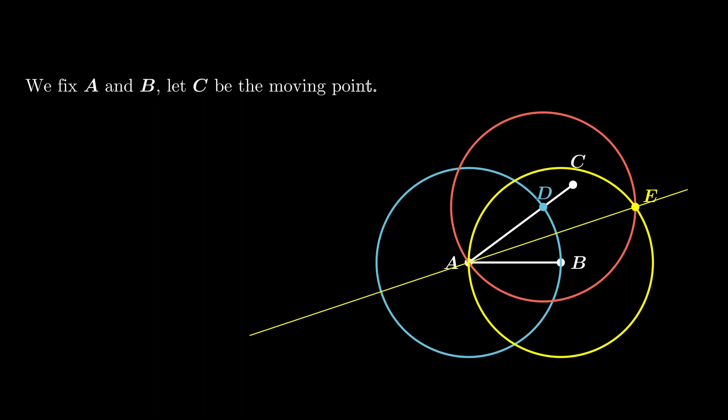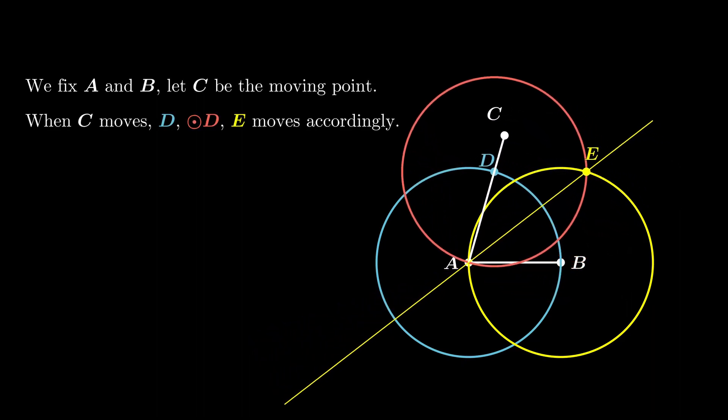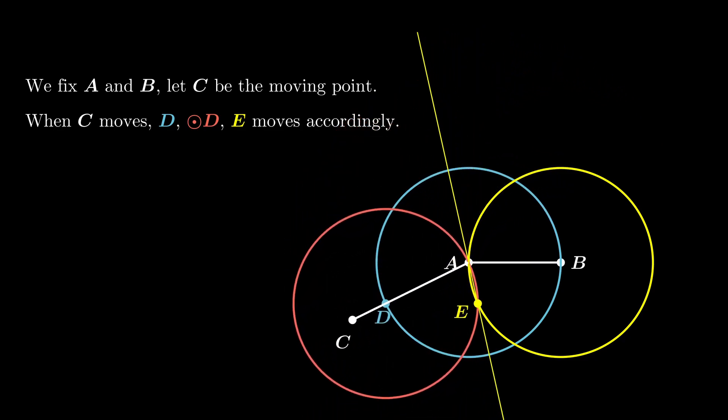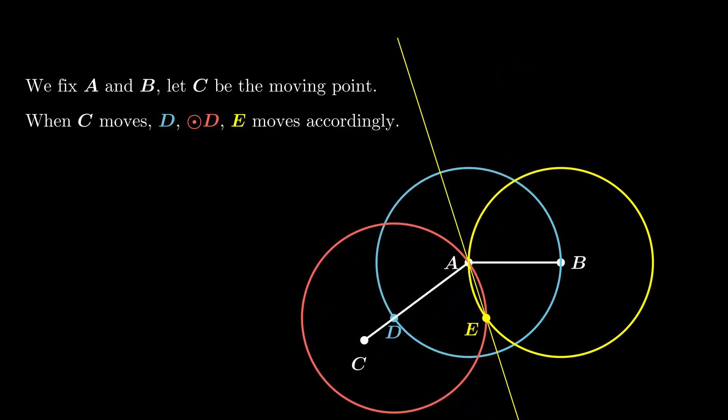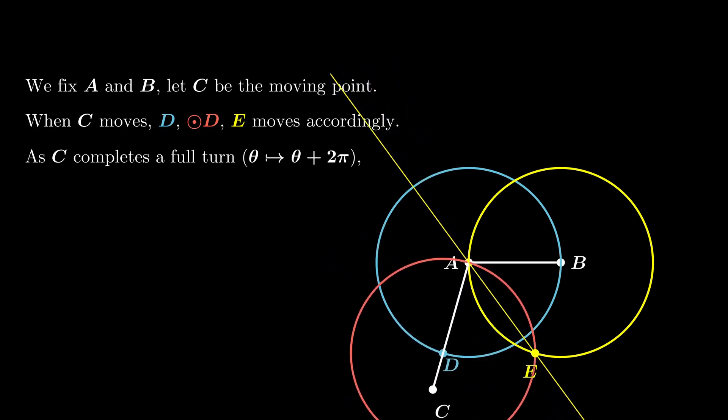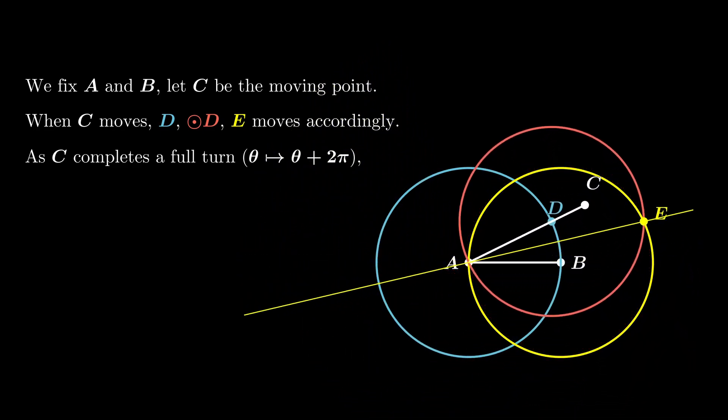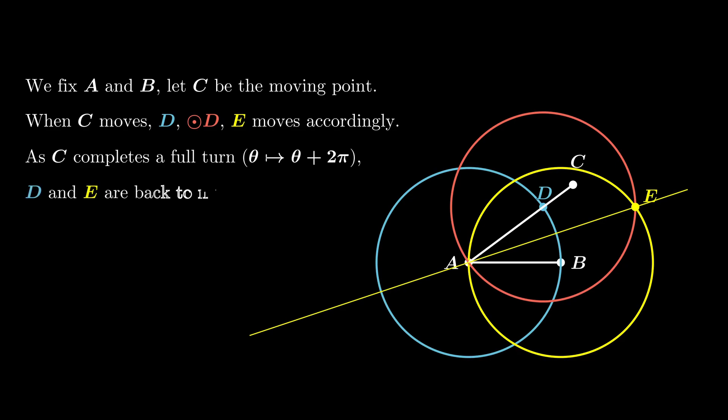Next, we allow the point C to be a moving point. More precisely, we fix A and B, and let C moving on a circle. When C is moving, both the point D and E is moving as well. Now if C completes a full round angle, then D and E are back to their starting positions.